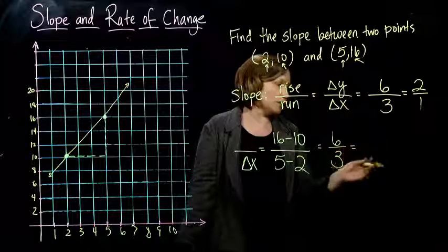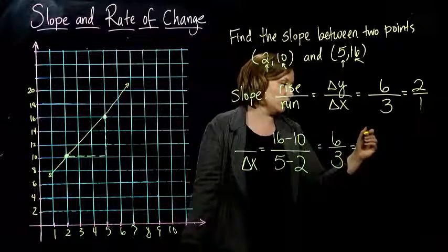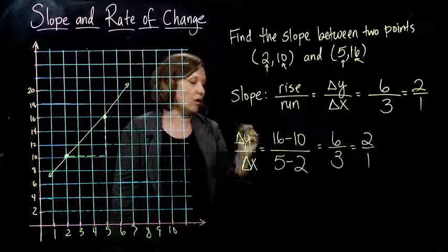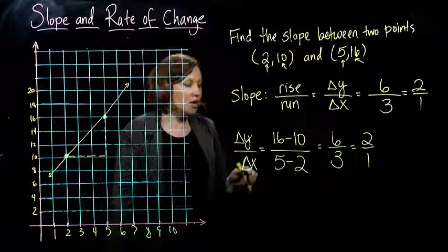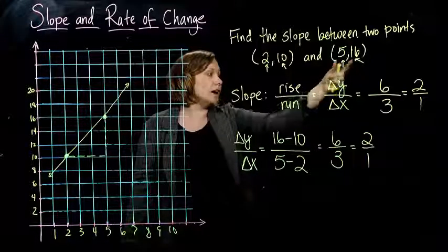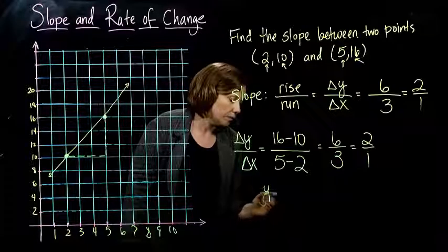I take the 16 and I take away the 10. So minus 10. And sure enough, right, I get six over three, which is the same as two over one, just like I did by doing it with the picture.